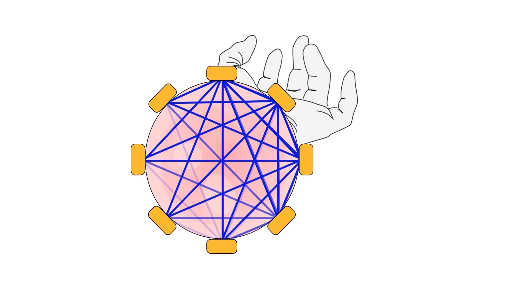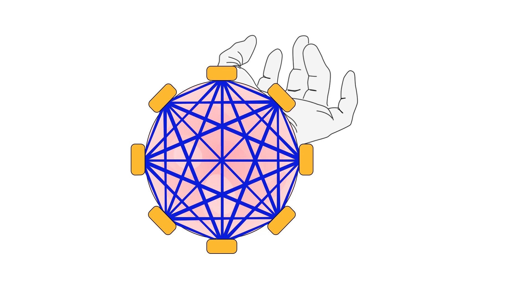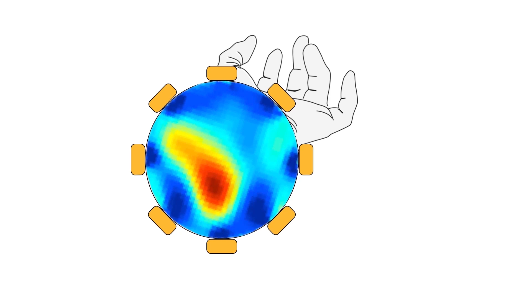We can also multiplex the transmitters and receivers to create many combinations of paths. With enough data, we can compute a 2D image of the arm's interior impedance distribution. The more electrodes, the better the resolution.